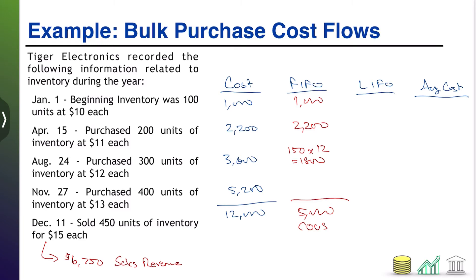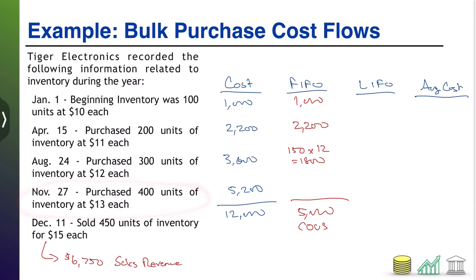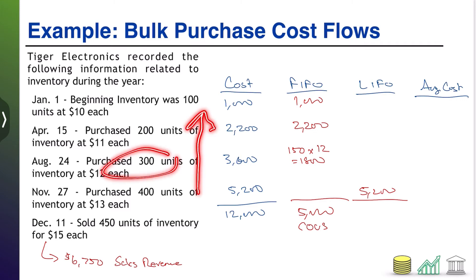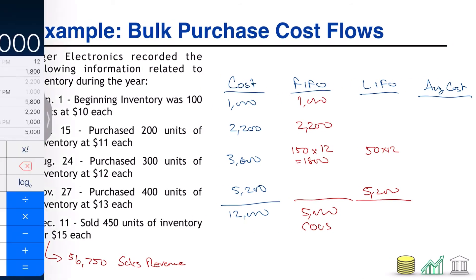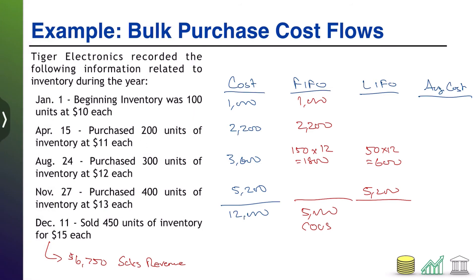Under LIFO, we go the opposite direction — whatever was bought last is assumed sold first. That last batch of 400 units at $13 each is gone: $5,200. We only need 50 more units, so we move to the next most recent batch of 300 units at $12 and pull 50 of them: 50 × $12 = $600. That's our entire 450 units. Adding $5,200 + $600 gives a cost of goods sold of $5,800 under LIFO.